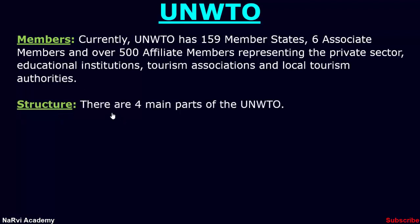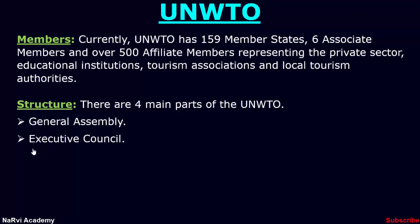Structure of UNWTO — there are four main parts. First, the General Assembly, which is the principal gathering of the World Tourism Organization; it meets every two years and elects a Secretary-General after every four years. Second, the Executive Council, which is the governing board of the UNWTO; it meets every two years and looks after the work progress of the organization. As the host country of UNWTO's headquarters, Spain has a permanent seat in the Executive Council.